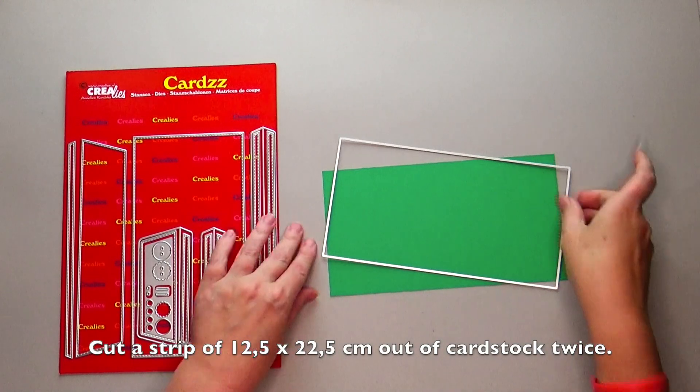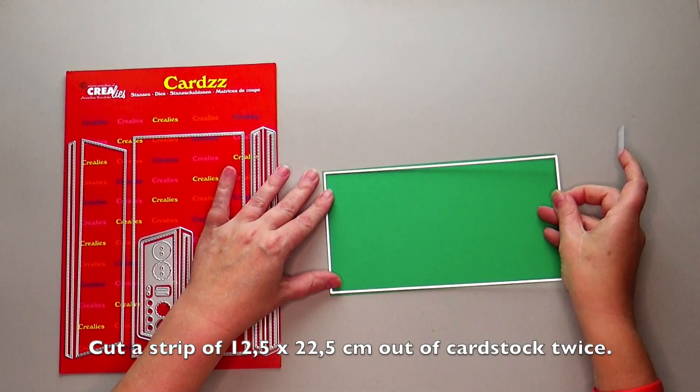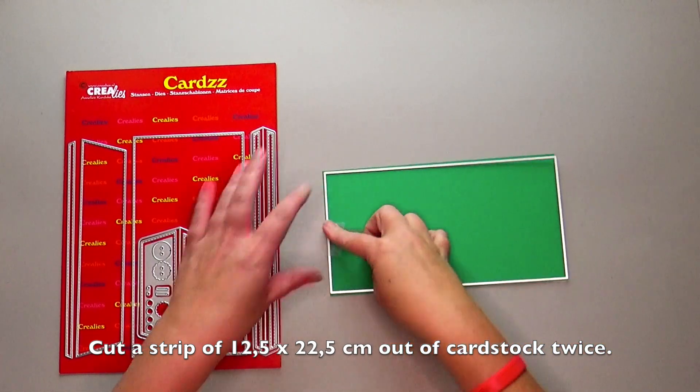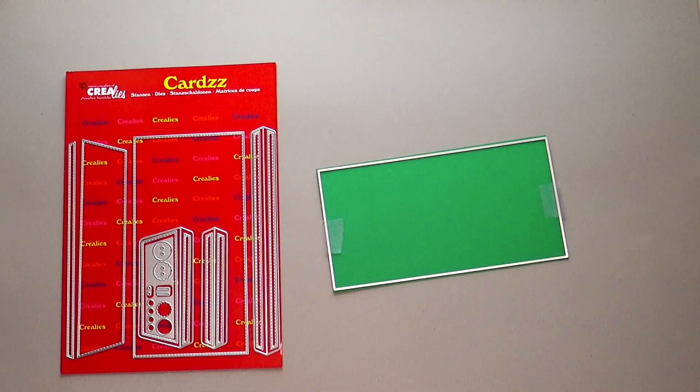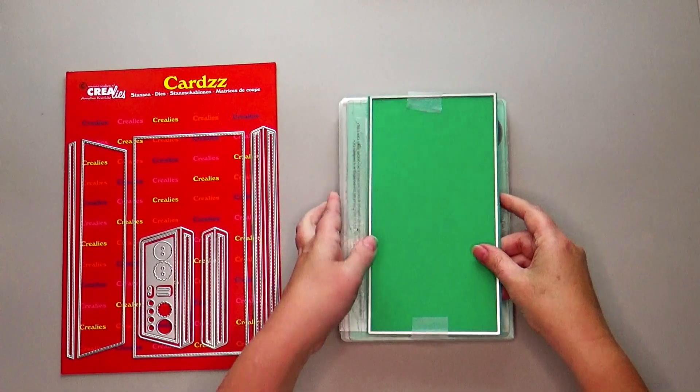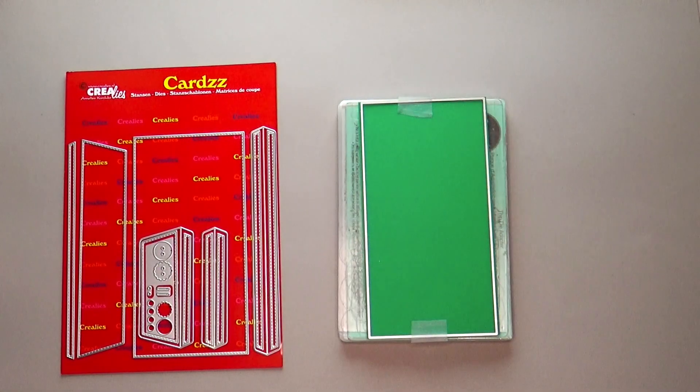Cut a strip of 12.5 by 20.5 centimeters out of cardstock twice. Die cut the rectangular base die out of these strips. Die cut the base die of the flap from a separate piece.